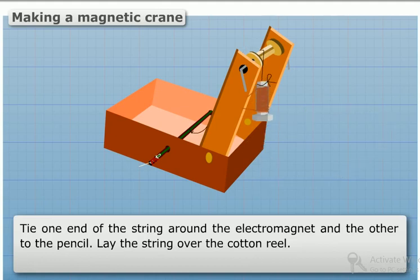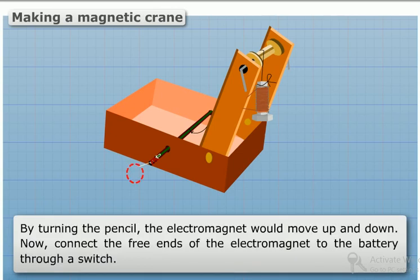Lay the string over the cotton reel. By turning the pencil, the electromagnet would move up and down.